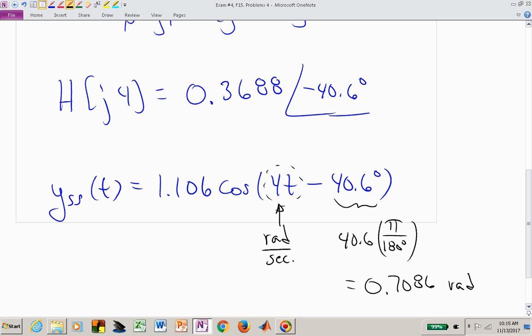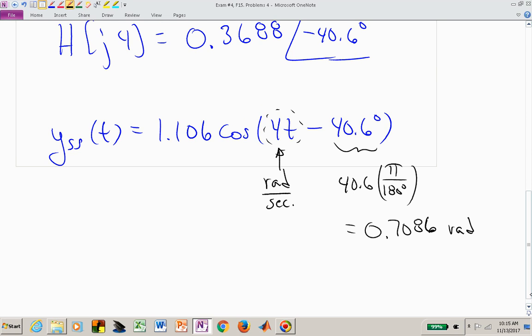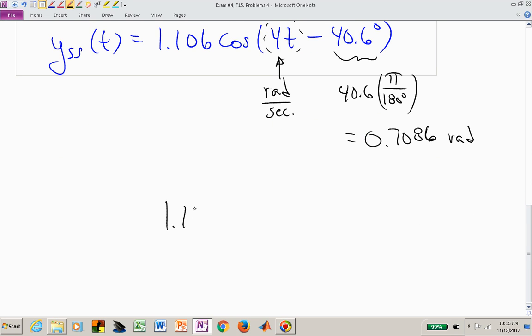And if you wanted to you could factor out a 4 from that 0.7086 to actually find the time shift or the time delay. Now what I'm saying is we have something like cosine of 4 times t minus 0.7086 over 4 and that's now your delay. So one fourth of 0.7 is what you're experiencing in time of the delay in the sinusoidal steady state answer.